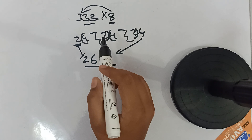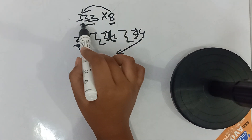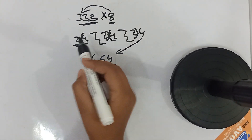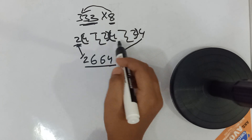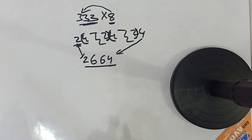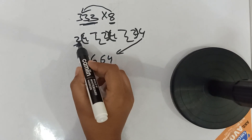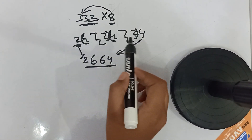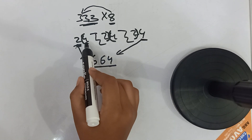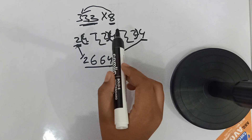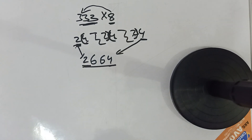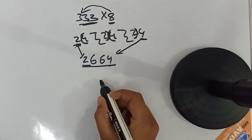Let me explain again what we did. We multiplied 8 with all three digits of the number and wrote down the results with step operator symbols between them. Then we left the first and last digits and added the overlapping pairs — 4 plus 2, then 4 plus 2 — which gave us our answer.